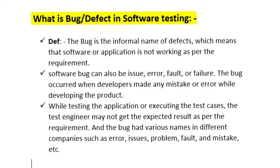For example, in a login page, we enter the username and password. If the requirement says username is entered first, but the application takes password first, that is a different output from the requirement. So this is a mistake — there are bugs, issues, and mistakes.